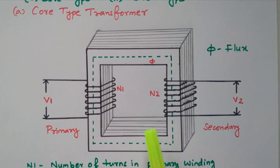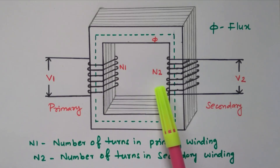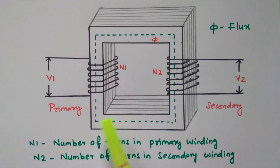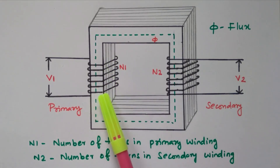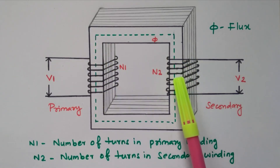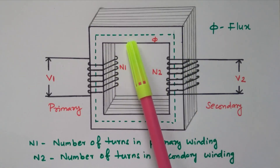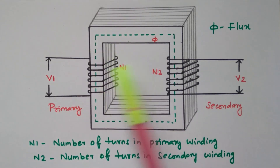N1 is the number of turns in the primary winding and N2 is the number of turns in the secondary winding. In the core type transformer, the winding surrounds the core. The windings are placed first, and over the winding the core sheets are placed one by one — both the horizontal and vertical cores are joined and placed over the winding. So we can easily remove the core since the winding is fixed.